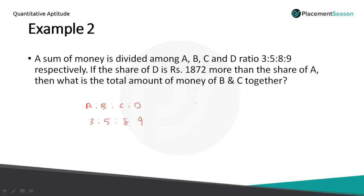So if share of D is Rs 1872 more than A, then D minus A equals 1872. In terms of ratio, if we subtract D and A the ratio will be 9 minus 3 and it is 6. So 6 parts equal to 1872.